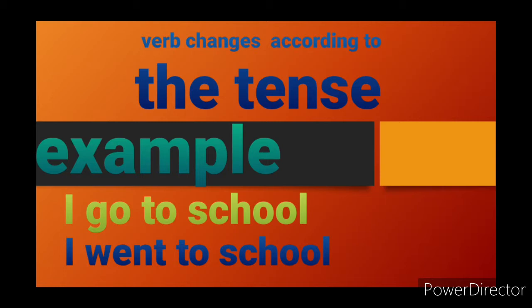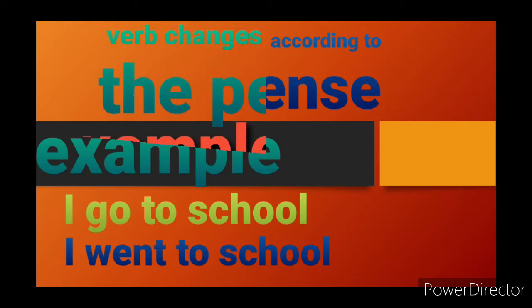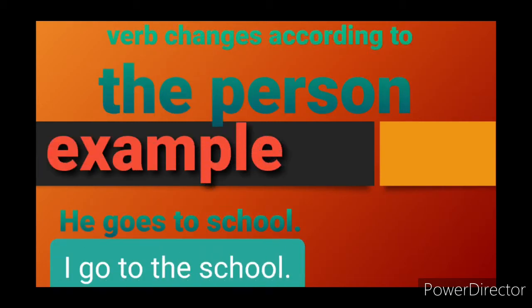Next example is person. The person of the subject is first, second, or third person. You can see: 'He goes to school' and 'I go to school.' In the first sentence, 'he' is the third person, so the verb has been changed. In the second, 'I go to school' — 'I' is the first person, so the verb has been changed accordingly.